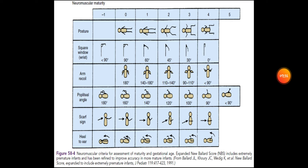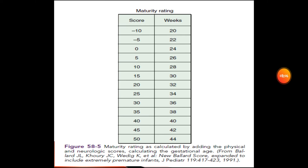Heel to ear refers to pushing the heel to touch the ear. If the heel can touch the ear, that is negative one point. If it goes all the way up but doesn't touch the ear, that's zero points. Going up a little less is one point. Not able to go halfway is two points. Less than halfway is three points. About 45 degrees is four points.